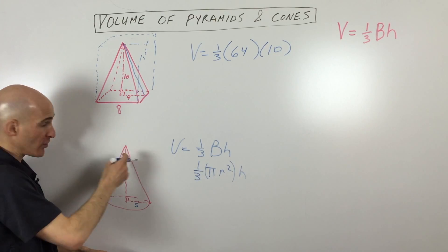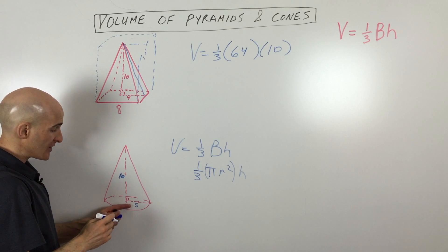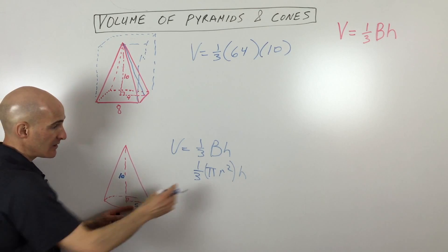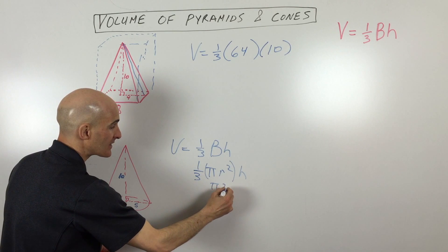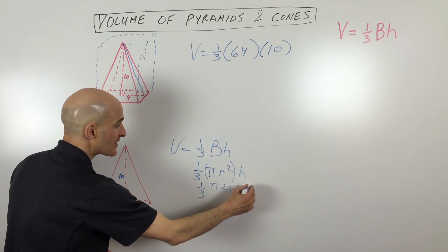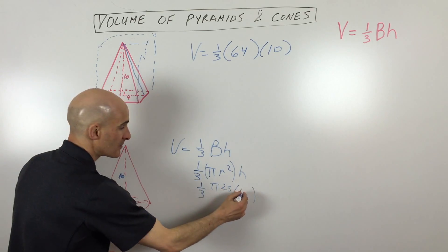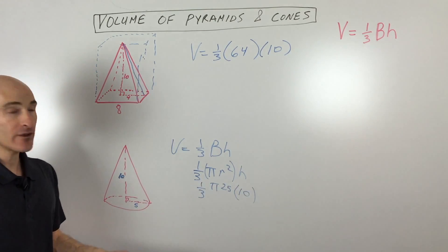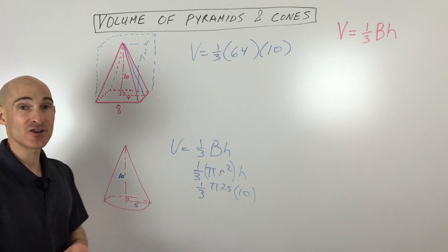And we want this perpendicular height, not the slant height. The radius is five. So we have pi times five squared. So that's pi times 25 times one third times the height, which is 10. So if you multiply all that together, that's going to give you your volume in units cubed.